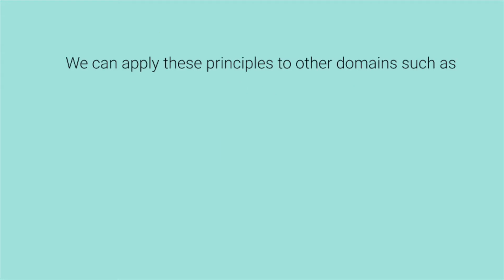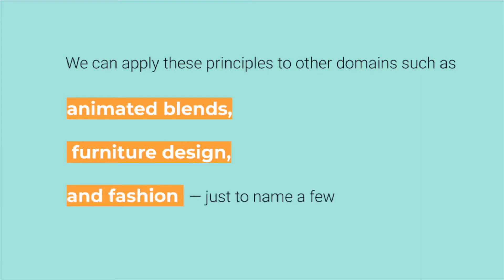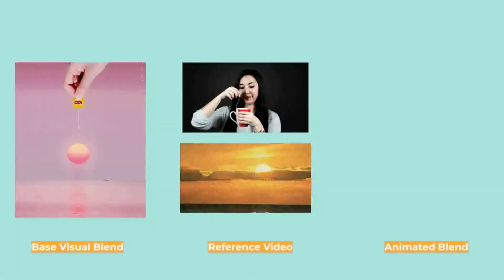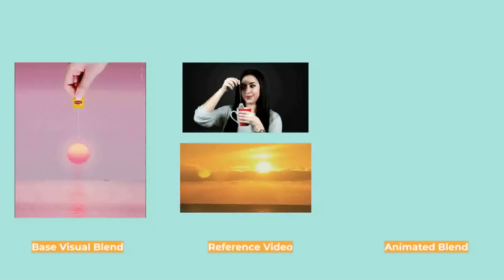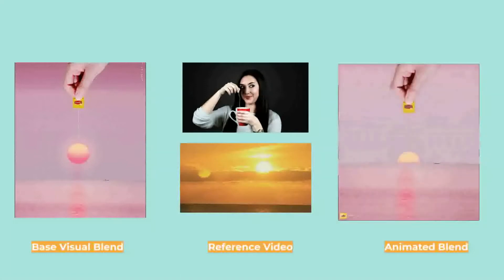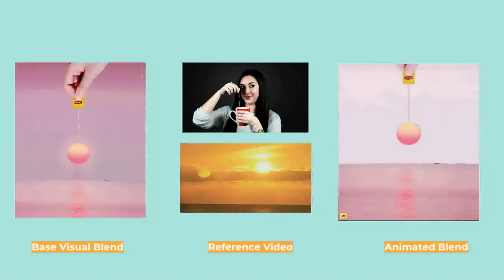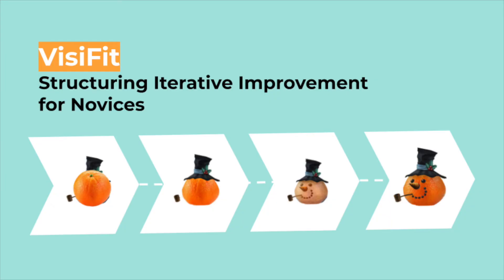We can apply these principles to other domains, such as animated blends, furniture design, and fashion, just to name a few. Animated blends add motion from reference videos to complement the message visual blends want to get across. To structure the iteration process of animated blends, motion can also be decomposed into fundamental dimensions — one example is to use the pattern of motion, which can be adjusted and blended upon, as shown in the example where the rising sun shares the up and down dip of a teabag. Visifit demonstrates how computational tools can support novices by enabling them to explore a structured design space quickly and efficiently.